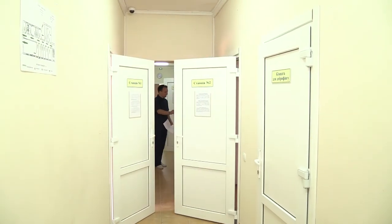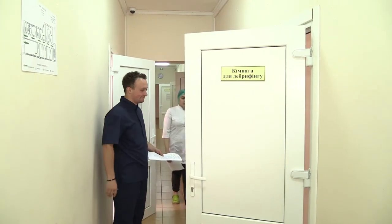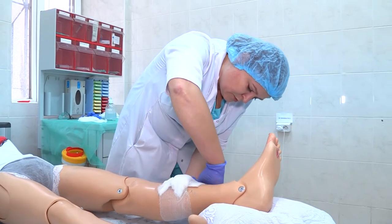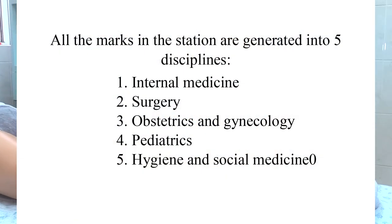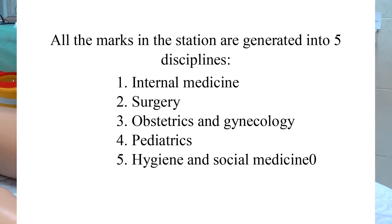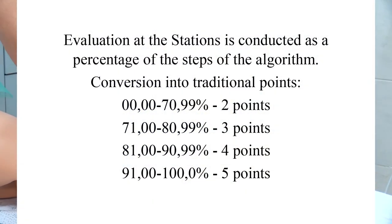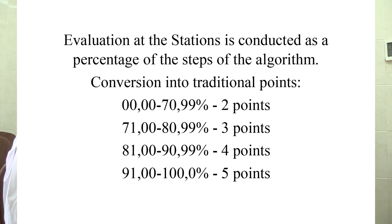Immediately after the exam, students move to the debriefing room to be announced the results. The exam is considered passed if the student's score is more than 71% of the maximum points at each station. Final scores are set by the examination committee on 4-point and 200-point scales. The student receives 5 grades for 5 disciplines: internal medicine, surgery, pediatrics, obstetrics and gynecology, and hygiene and social medicine. The final grade is the average score for all stations that are components of the particular discipline. If a student does not agree with the assessment at a station, they can file an appeal, reviewed via video recording of the student's response.